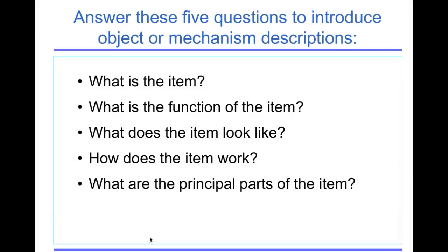When you are introducing an object or mechanism type of description, answer these five questions. What is the item? What is the function of the item? What does the item look like? How does the item work? What are the principal parts of the item? In other words, you want to give your reader as much information as they need to understand the mechanism.